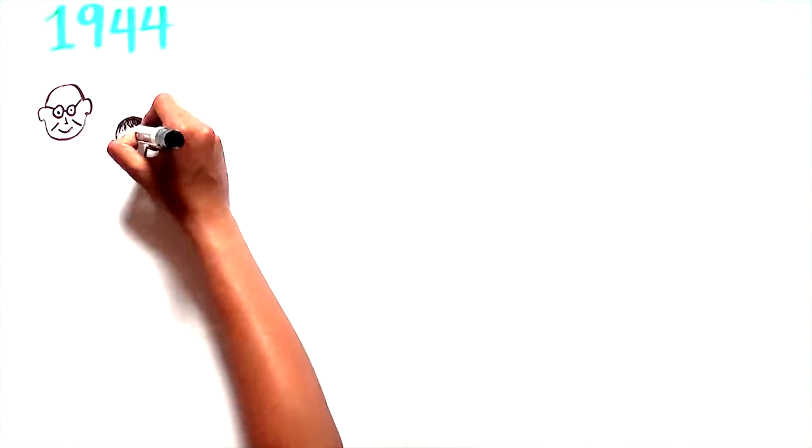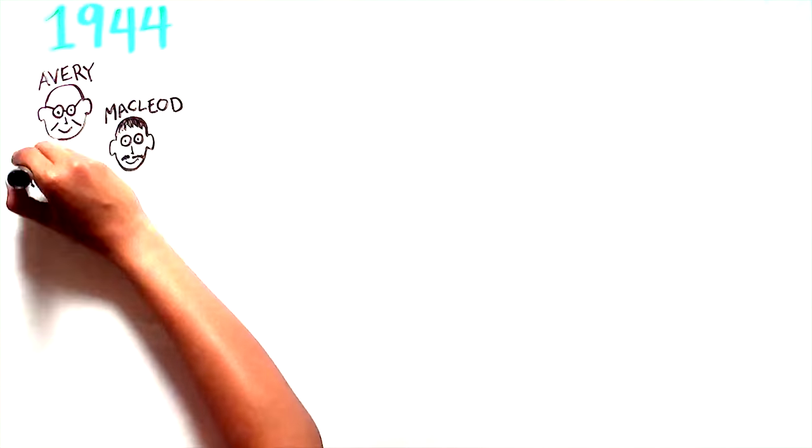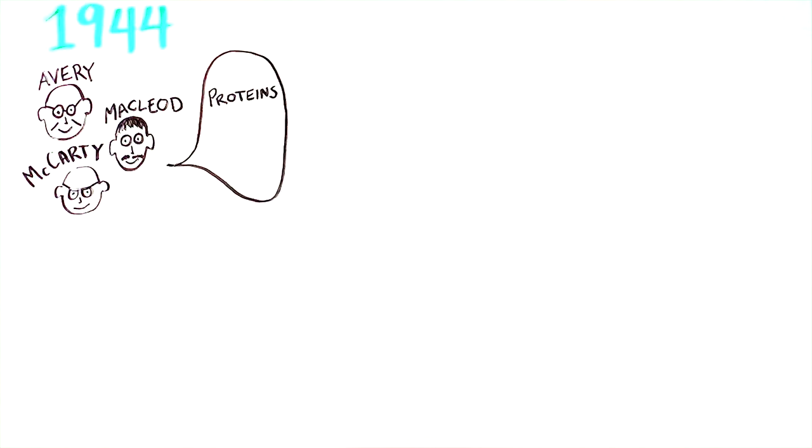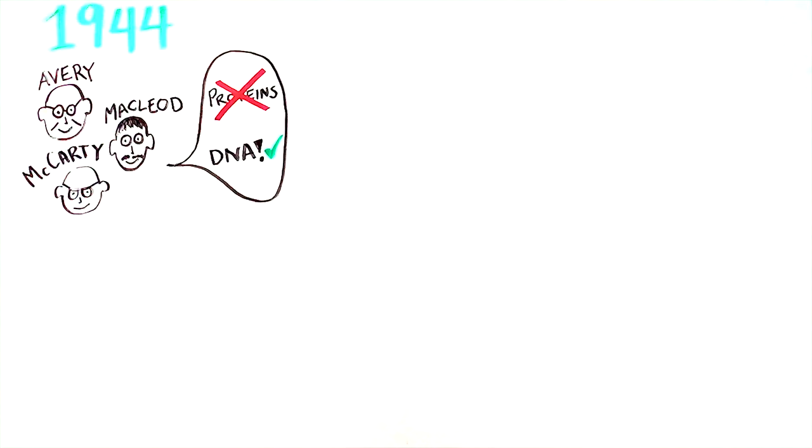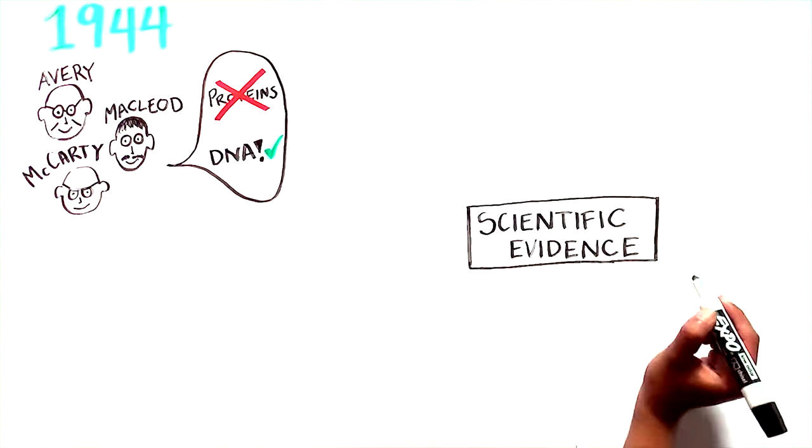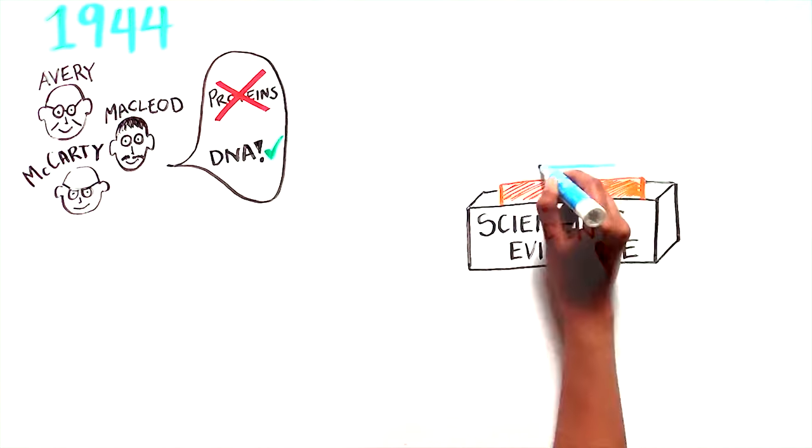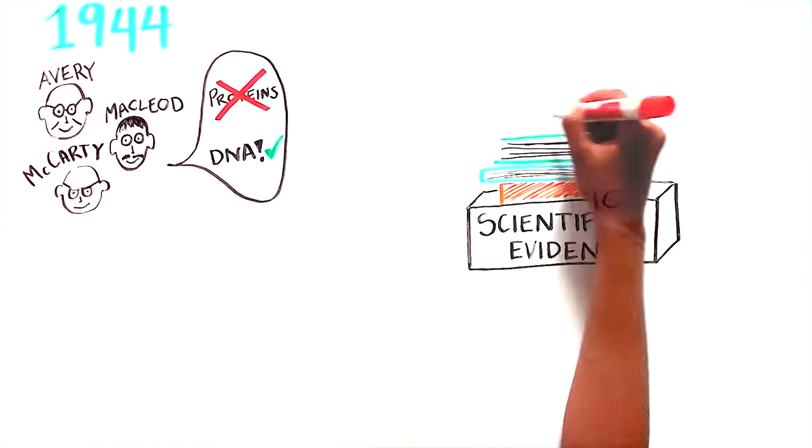An experiment by Avery, McLeod, and McCarty in 1944 first suggested that proteins were not responsible for heredity, as previously thought, and instead DNA was the culprit. However, given that their results flew in the face of the current thinking, not everyone was convinced.